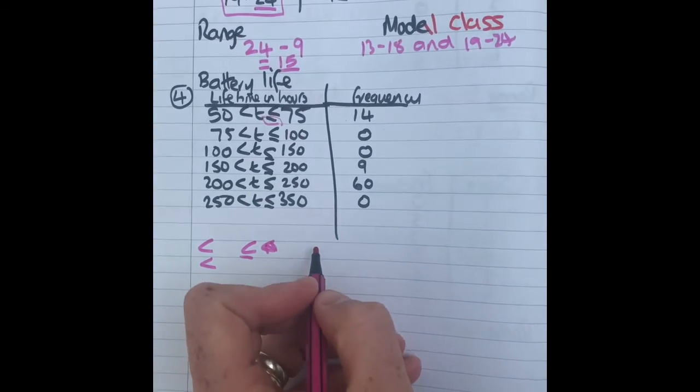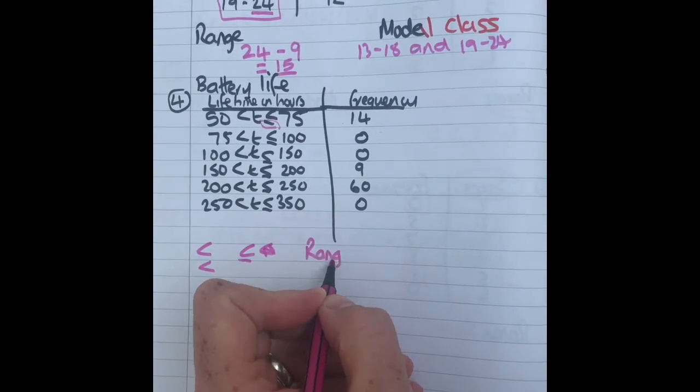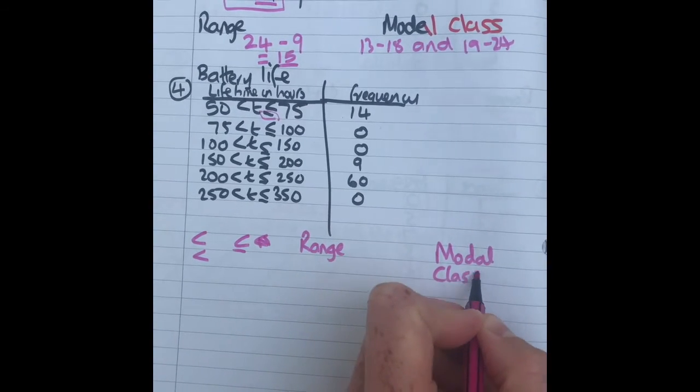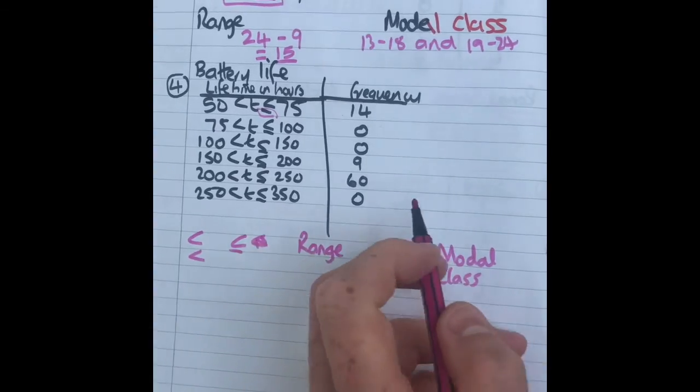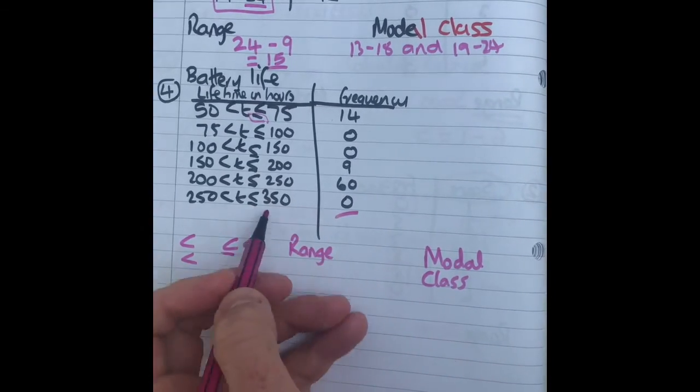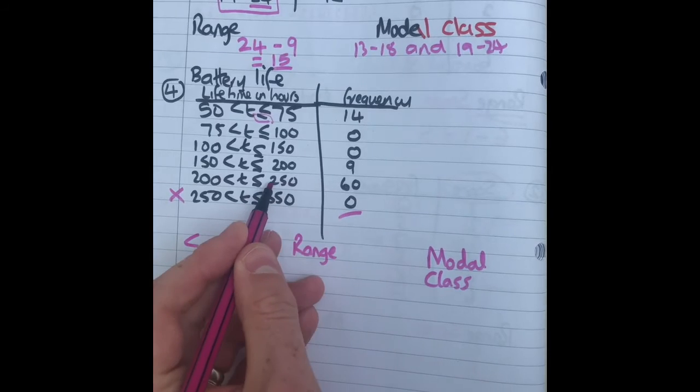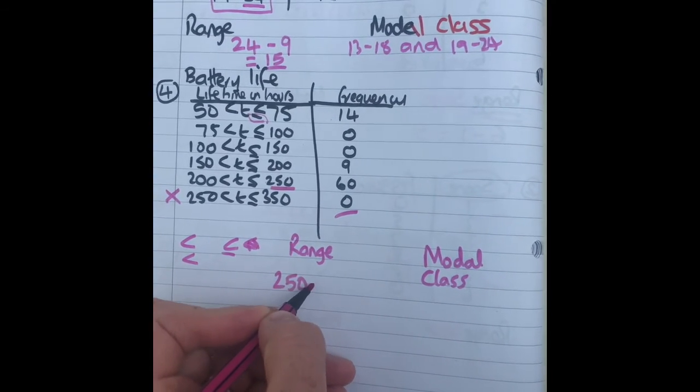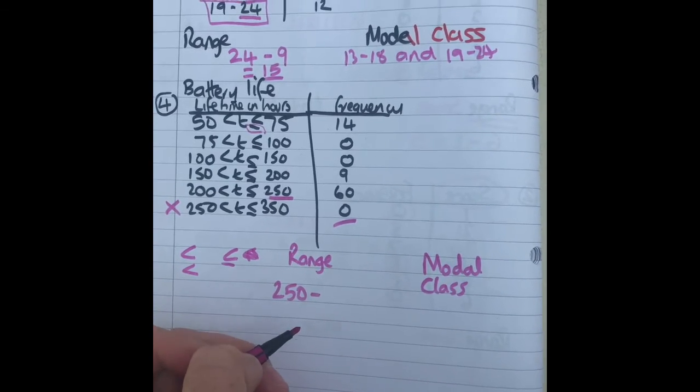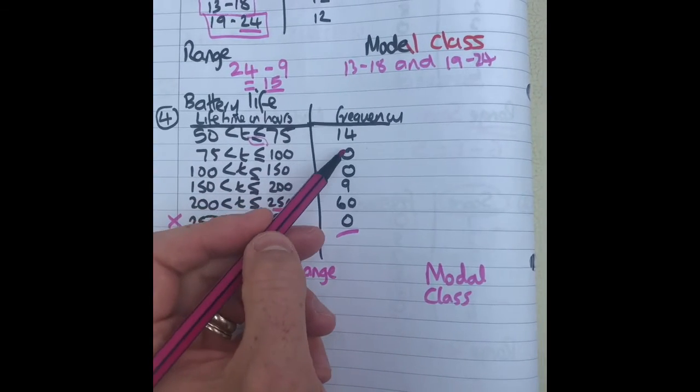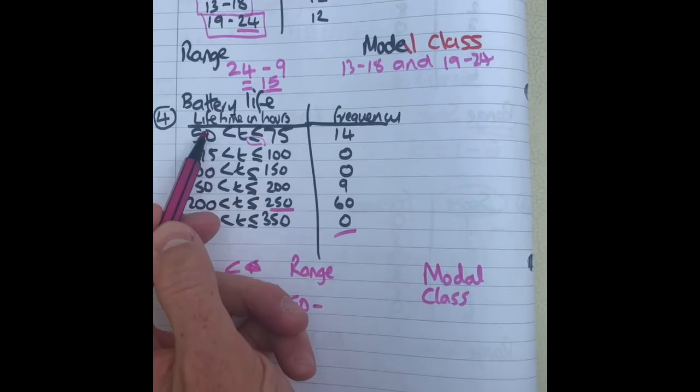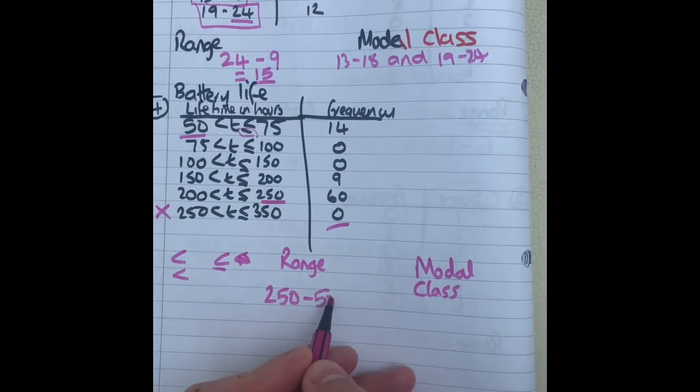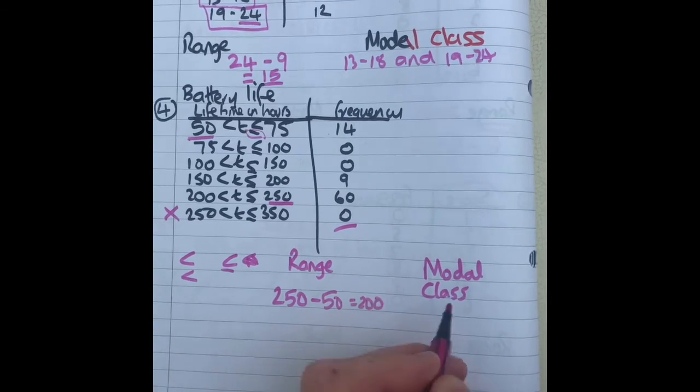We're going to work out the range and the modal class. So the range, what's the highest value it could be? Well there's none in this one, so it can't be that group. So the 60 in this group, that could be the highest value, so 250 is the highest. Remember range is biggest take away smallest. What's the lowest value? There's none in that one, there's 14 in that group, that could be the lowest value. 250 take away 50 is 200, that's the range.